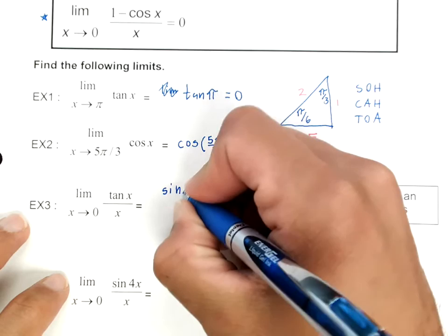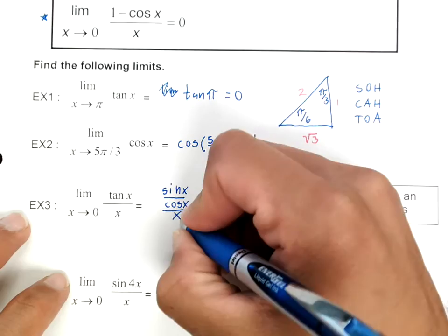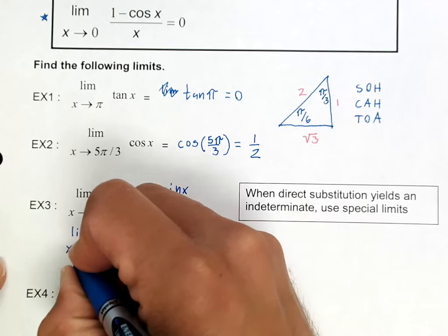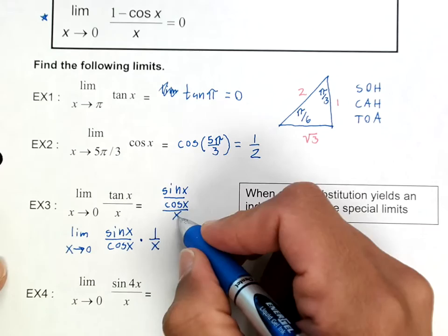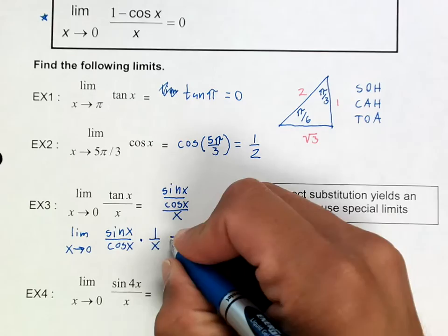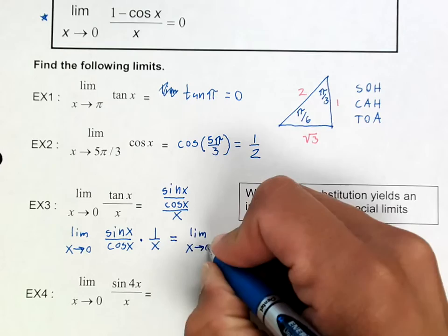Now the first thing we can do is that we can say that tangent x is equal to the sine of x over the cosine of x, and you're dividing all of this by x. So now I'm going to rewrite this. If I have the limit as x goes to 0 of sine of x over cosine x times 1 over x, notice that I just rewrote this.